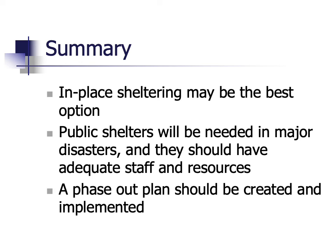To wrap things up, in-place sheltering may be the best option, as evacuating people to another area could be very dangerous in certain disasters. In many cases we'll need to open public shelters, and they'll be needed when there's major damage, destruction, and loss of infrastructure. These public shelters should have adequate personnel and resources to care for victims. Opening a shelter is not the only thing we need to do — we also need a phase-out plan, which means combining shelters together or eliminating them altogether.